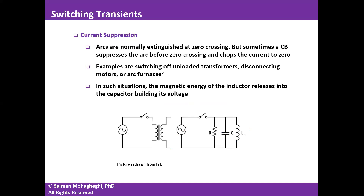We often open circuit breakers at zero crossing of current in high-voltage applications, but in smaller-scale applications we don't have the means to monitor the current waveform. For example, when you turn on or off an appliance at home, you don't know when the zero crossing occurs. When you open the circuit breaker, it is very likely the current is not zero — you're chopping that current to zero. We call that current suppression.